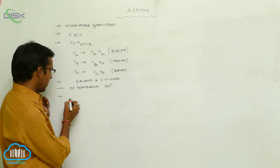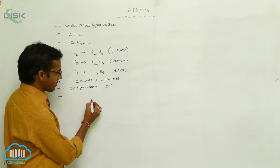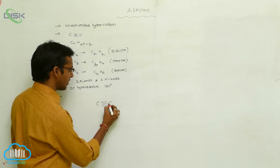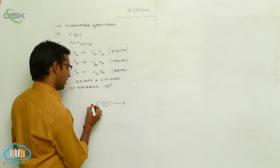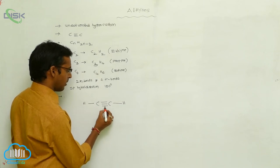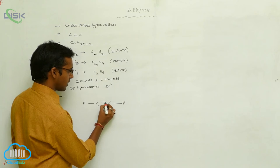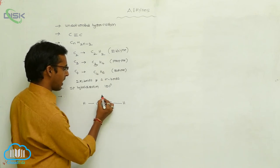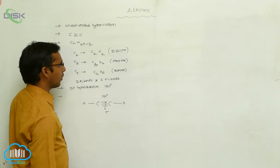The general structure of alkyne, for example acetylene, is H-C triple bond C-H. Here, this is a sigma bond, this is a pi bond, and this is also a pi bond. So two pi bonds are present, and the bond angle is 180 degrees.